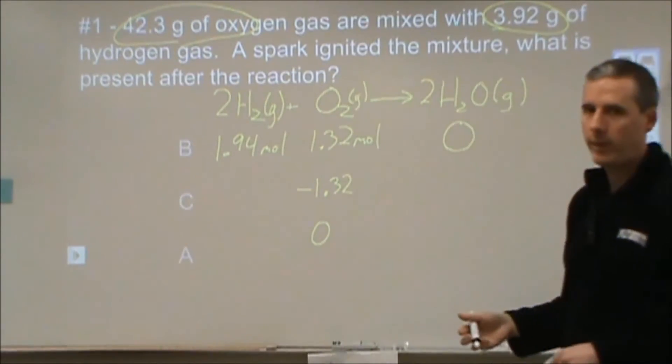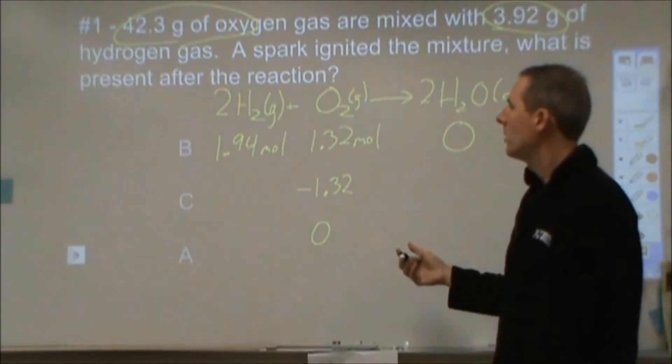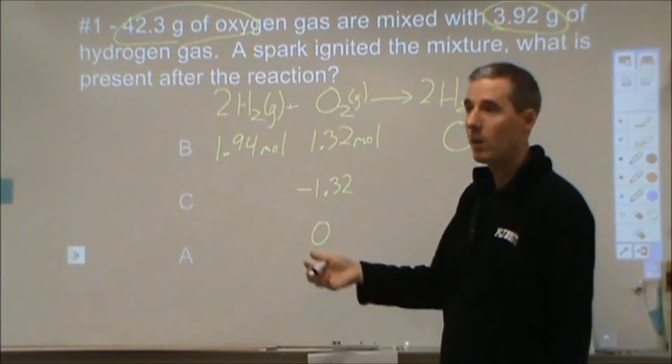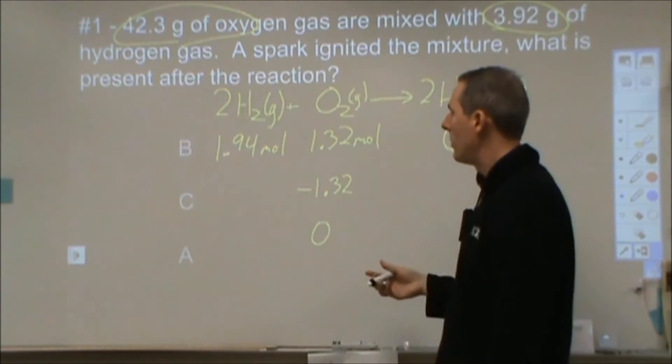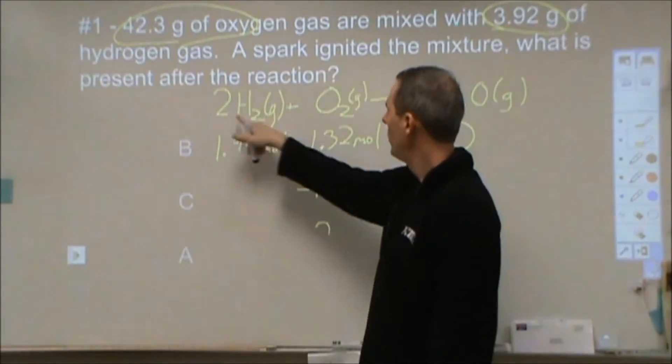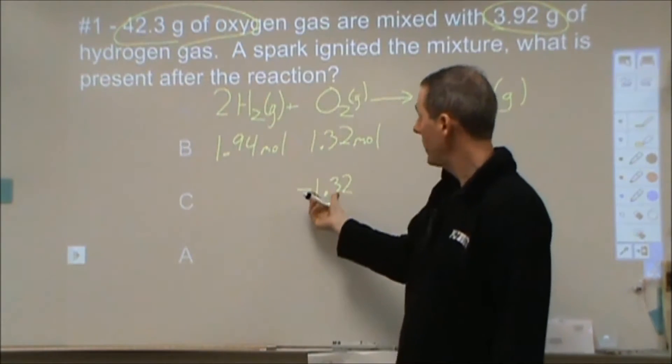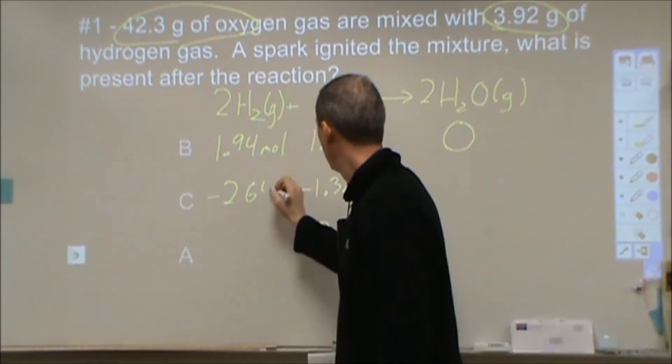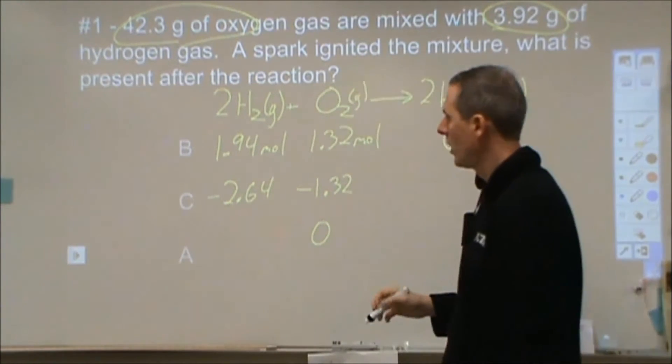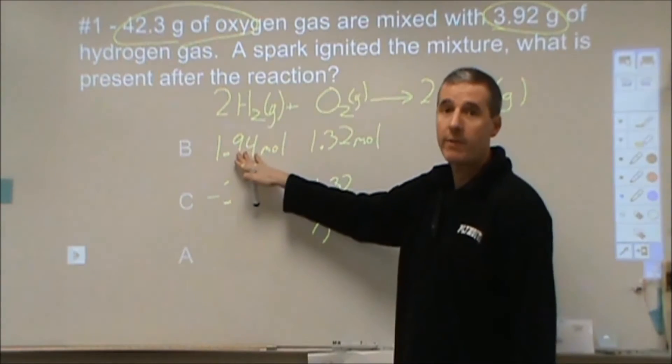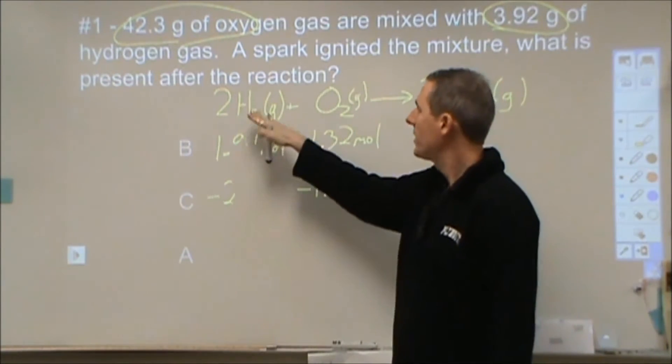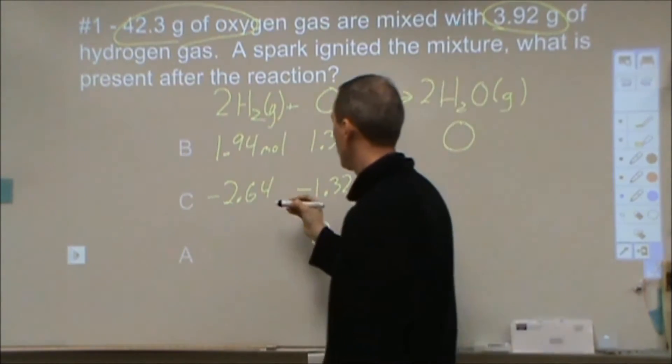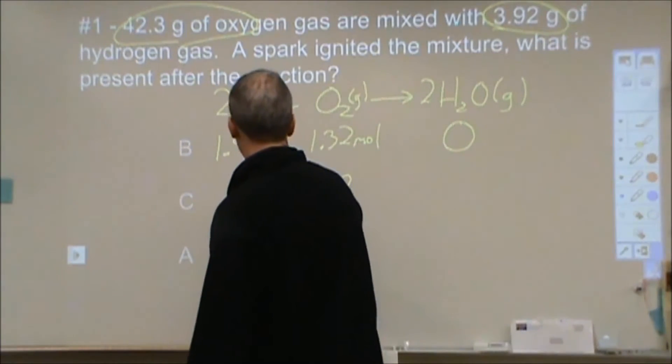What you then need to do is you need to look at, okay, well what would the other one be in that case? This is going to work out or it's going to be impossible. So a two to one ratio here implies that I would need twice as much hydrogen. So I would need to react 2.64 moles. That doesn't make any sense because I don't have that many. So what that implies then is the hydrogen is going to actually react first and that's going to be my limiting reagent.